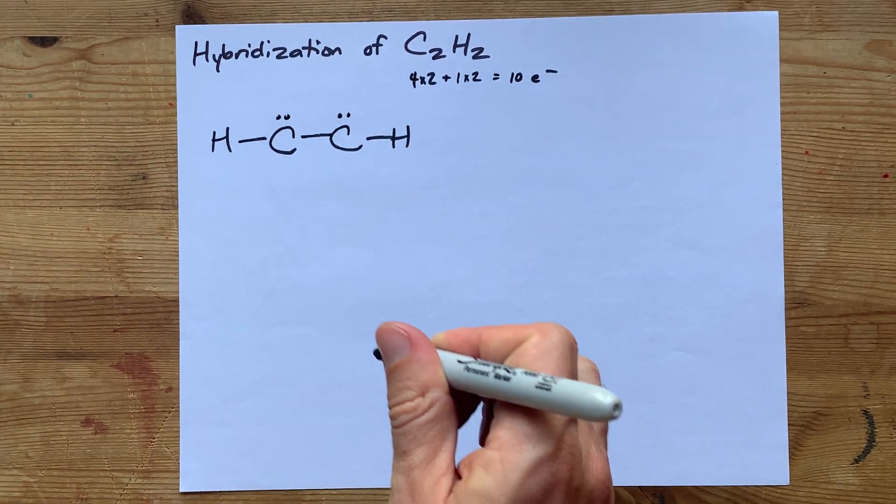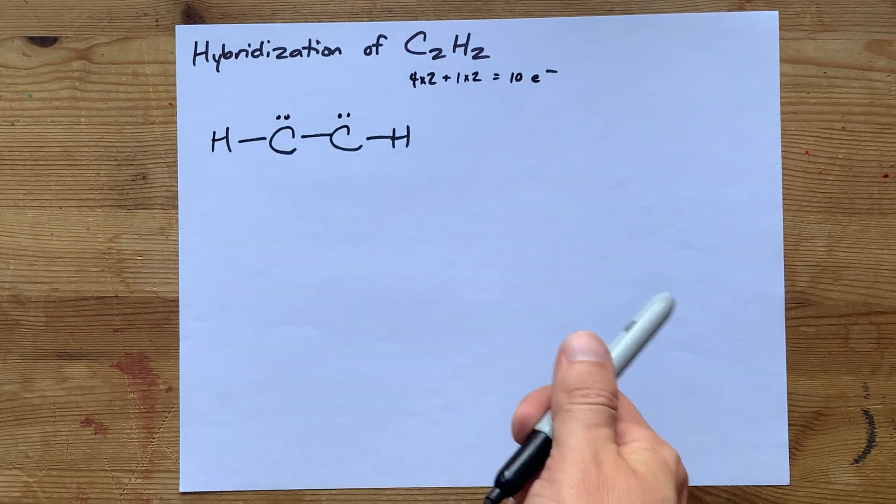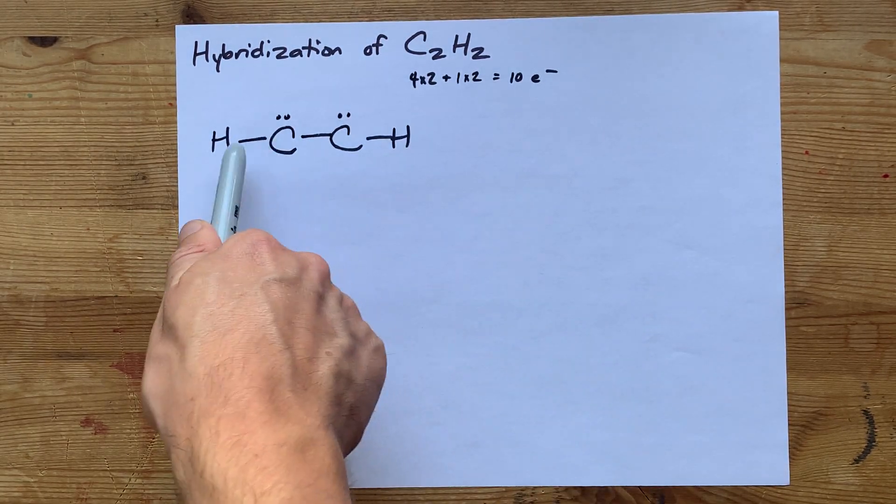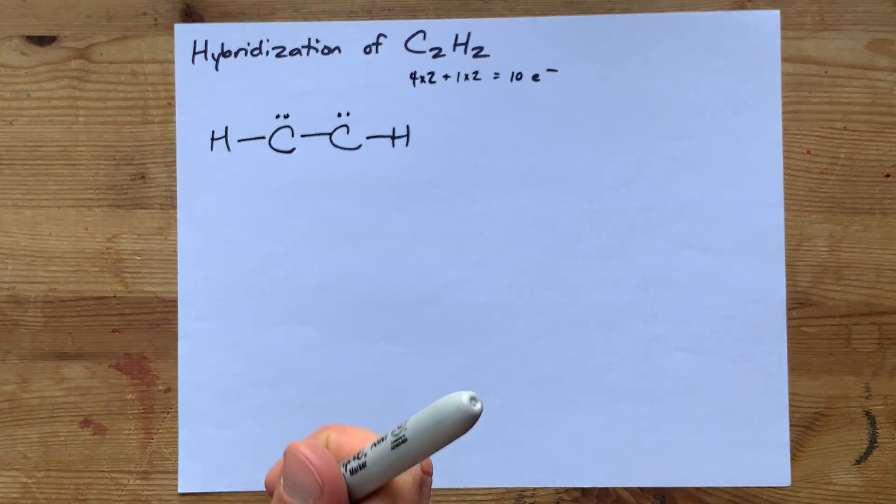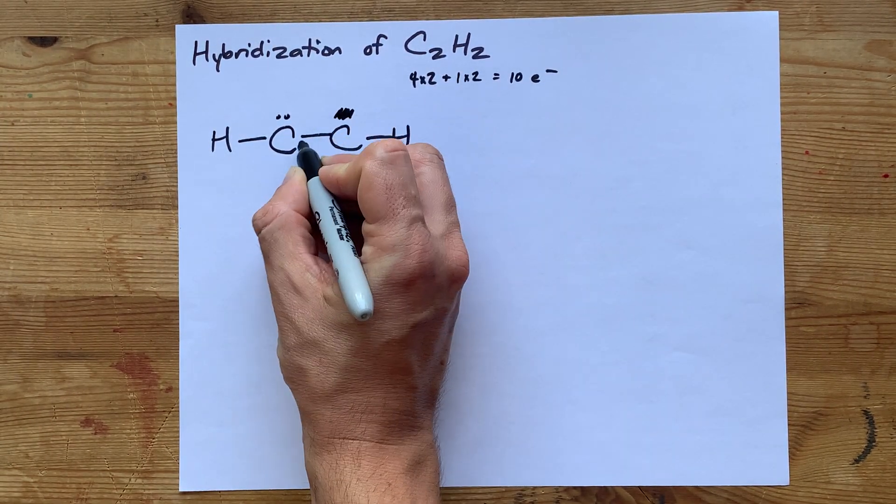There we go. And then lastly, we need to make sure each of these carbons obeys the octet rule. Currently, this carbon only has 2, 4, 6 electrons around it.